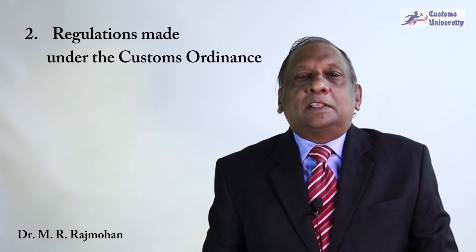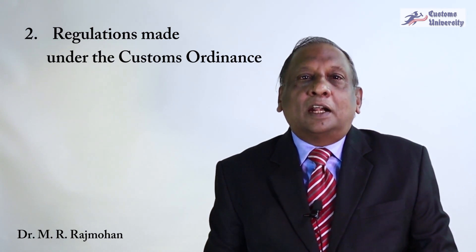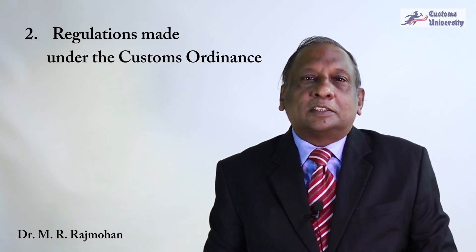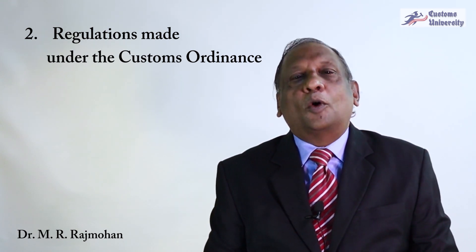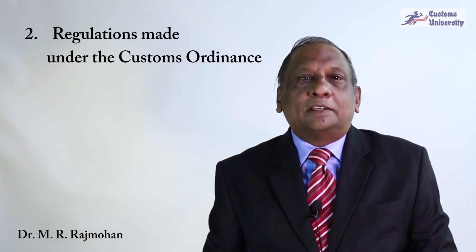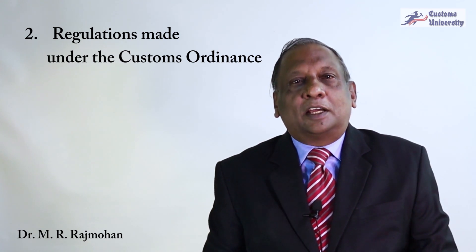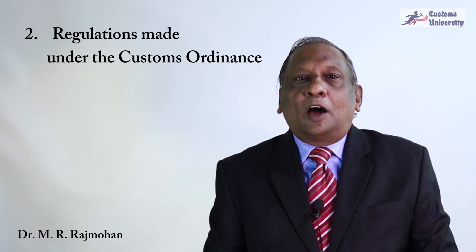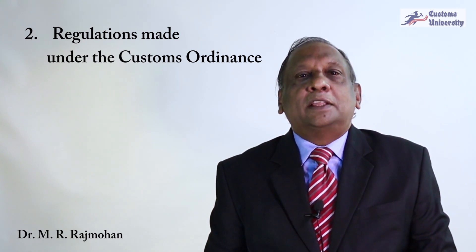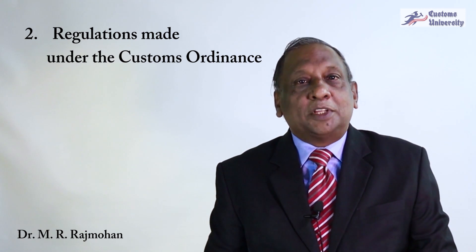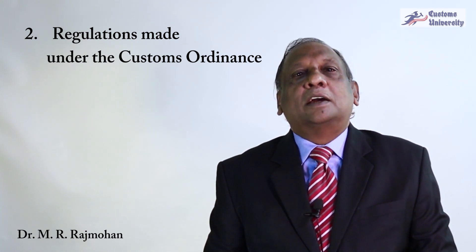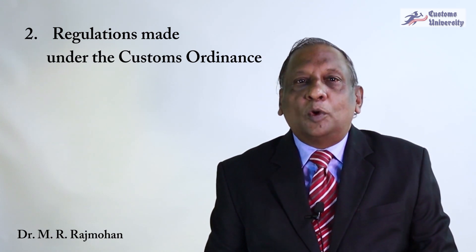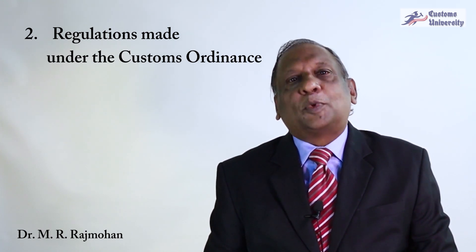Now let's see the customs regulations passed under the customs ordinance. They are called subsidiary legislation. The customs ordinance is called principal legislation — the main law, passed by parliament. The regulations, if provided in the customs ordinance, are made by the Minister of Finance. There are also notifications made by the Director General of Customs. There was a time where the principal collector of customs could make regulations, but now those powers are removed.